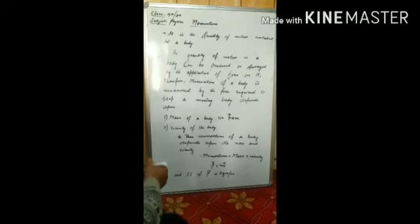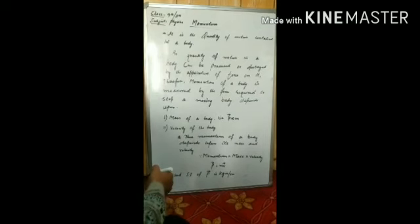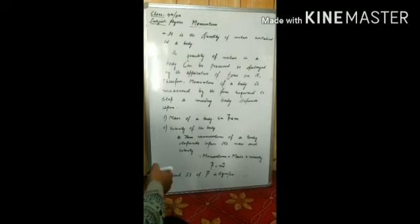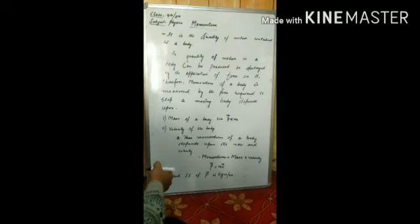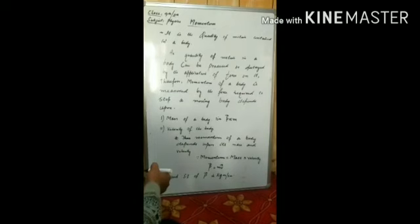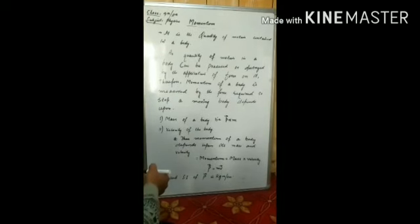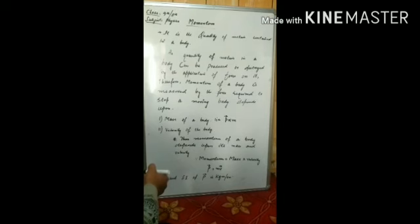Second thing, it depends upon the velocity of a body. A bullet thrown with the hand can be stopped much more easily than the same bullet fired from a gun. This is because in the latter case the velocity is much larger. Therefore, the larger the velocity of a body, greater is its linear momentum.